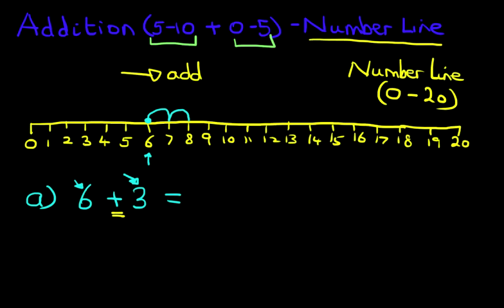1, 2, 3. 1, 2, 3 jumps. What number did we land on? We landed on number 9. Let's write that down. 6 plus 3 equals 9. That is correct.